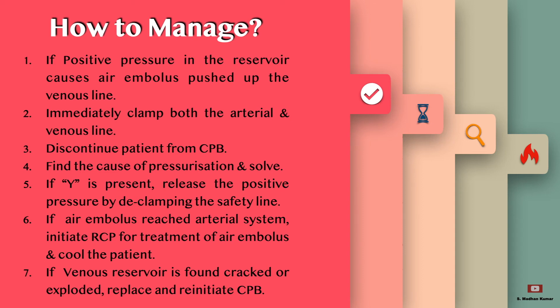If the air embolus reaches the arterial system, initiate retrograde cerebral perfusion (RCP) for treatment of the air embolus and cool the patient accordingly. If the venous reservoir is found cracked or exploded, replace it and reinitiate CPB after confirming the cause of pressurization.